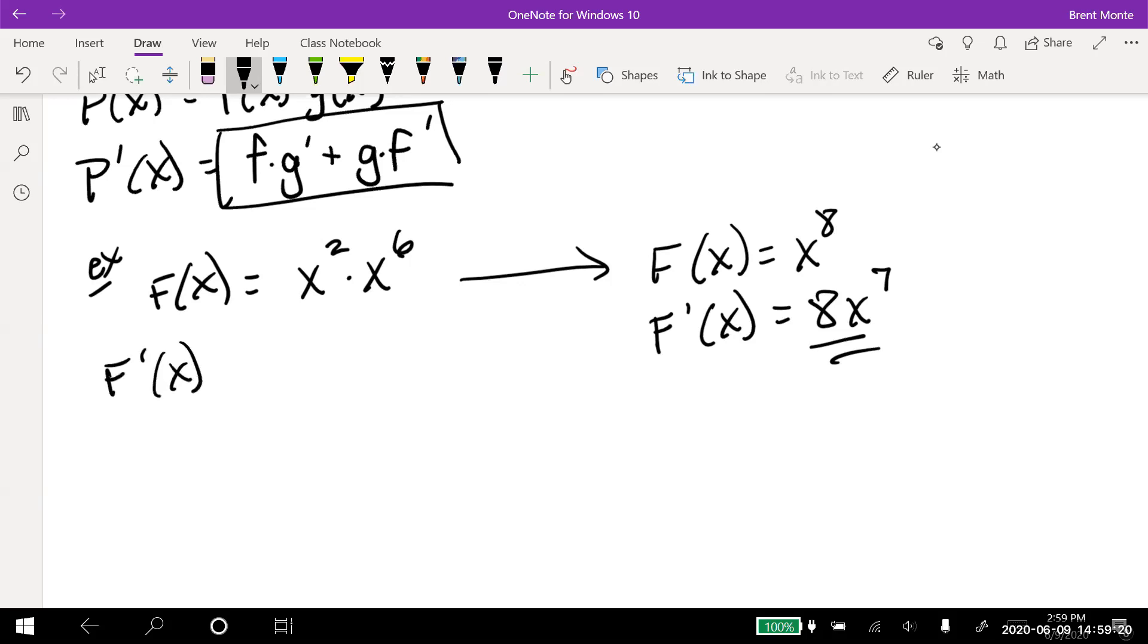But we don't always have that option, especially if one of the factors is, say, e^x or ln(x) or there's a chain rule coming up. So anyway, what we're doing is taking the derivative. Now, let's list this. This x² will be f, that'll be the first function. And then x⁶ will be the second function, g.